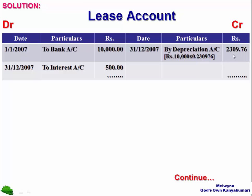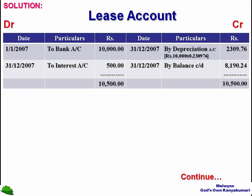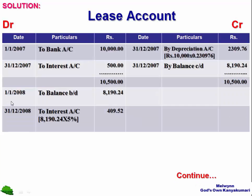Next, we tally the account. The debit side highest value is 10,500, which we immediately write on the credit side also. We find out the difference on the credit side: Rs. 8,190.24 by balance carried down. Then we bring down this value to the next date, 1-1-2008, as balance brought down: Rs. 8,190.24.